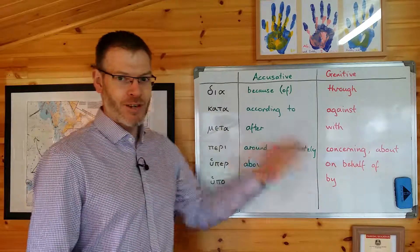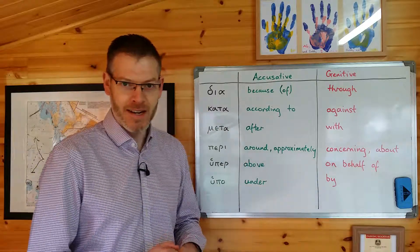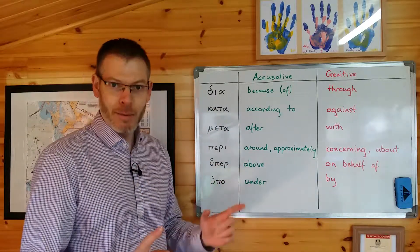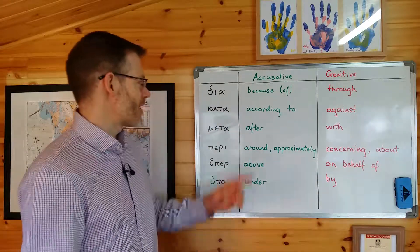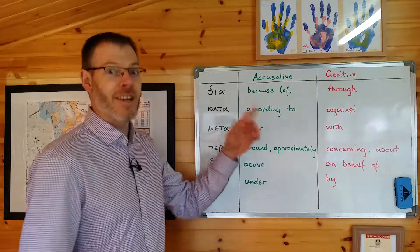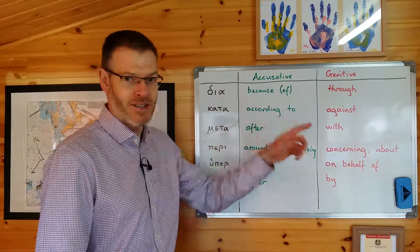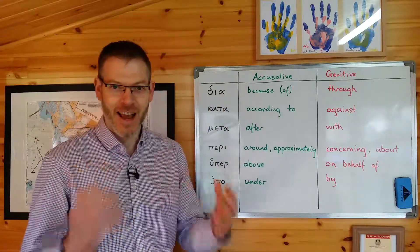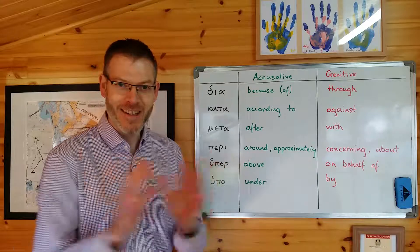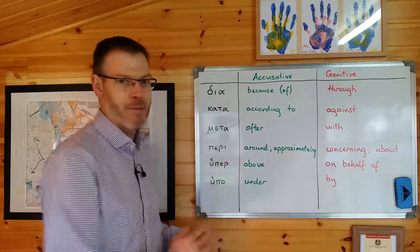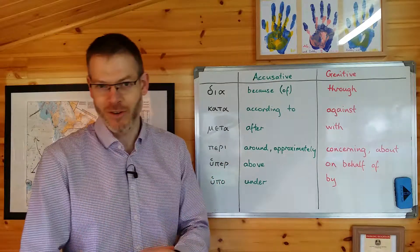So you've got to remember six times two — that's 12 meanings — and you've got to make sure you don't get them the wrong way around. For example, dia means 'because of' in the accusative, not in the genitive; it means 'through' in the genitive. So how do you get all these 12 meanings for these six prepositions in the right order?